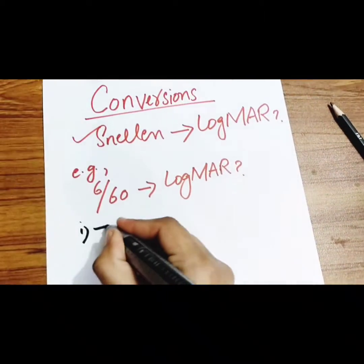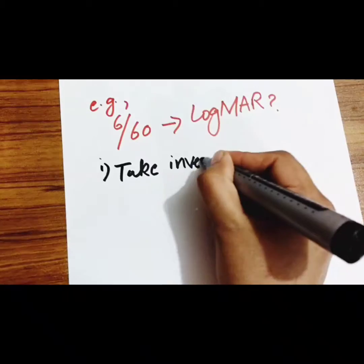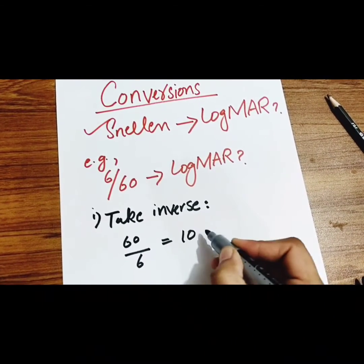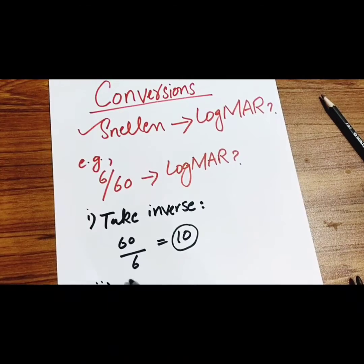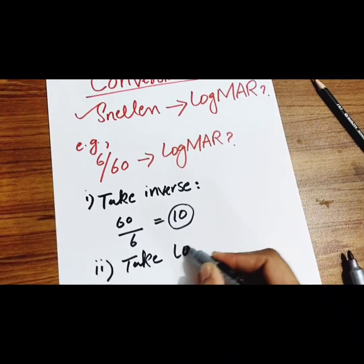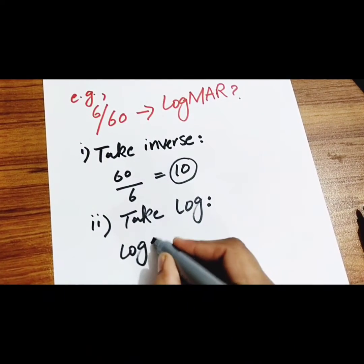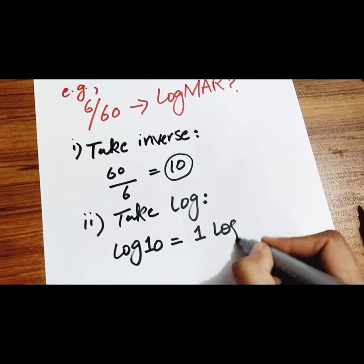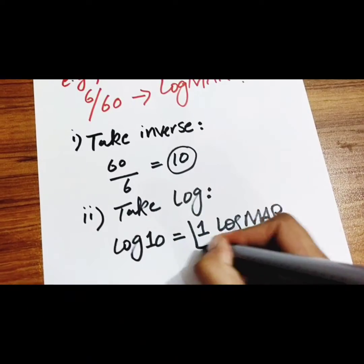The first step is to take the inverse of 6 by 60, which becomes 60 divided by 6, equal to 10. The second step is to take the log of 10. Log 10 is equal to 1. So finally, 6 by 60 is converted into 1 logMAR.